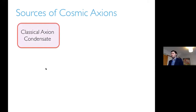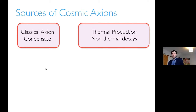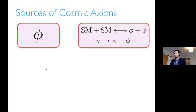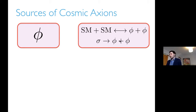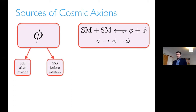Sources of cosmic axions: there are two possible sources. There is the classical axion condensate, which is the evolution of the classical field. And there is thermal production and non-thermal decays, which produce hot axion particles. Phi is the classical axion field with a large occupation number, so we're just interested in the evolution of the classical field. The other source is production of axions from thermal production from the standard model or decay of some heavy particle.